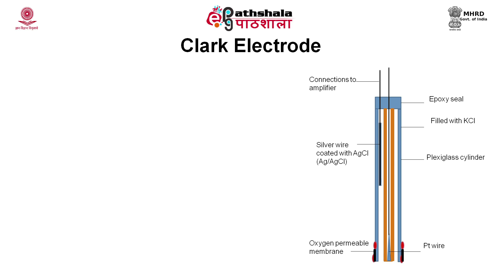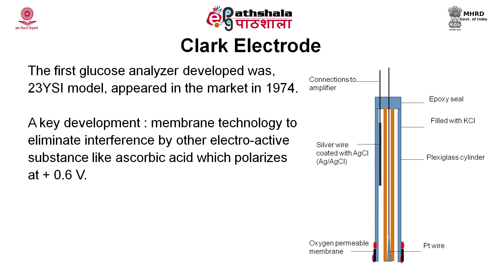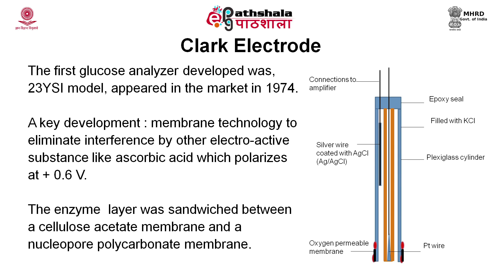This is the assembly of a Clark electrode, in which silver/silver chloride acts as the reference electrode, the platinum wire acted as the working electrode, and there is an oxygen permeable membrane. This kind of glucose analyzer was developed as a commercial product named the 23YSI and appeared on the market in 1974. The key development in this method was the use of membrane technology, which eliminated the interference of other electroactive substances like ascorbic acid, which also polarizes at 0.6 volt — the polarization potential of hydrogen peroxide. The enzyme layer was sandwiched between a cellulose acetate membrane and a nucleopore polycarbonate membrane.